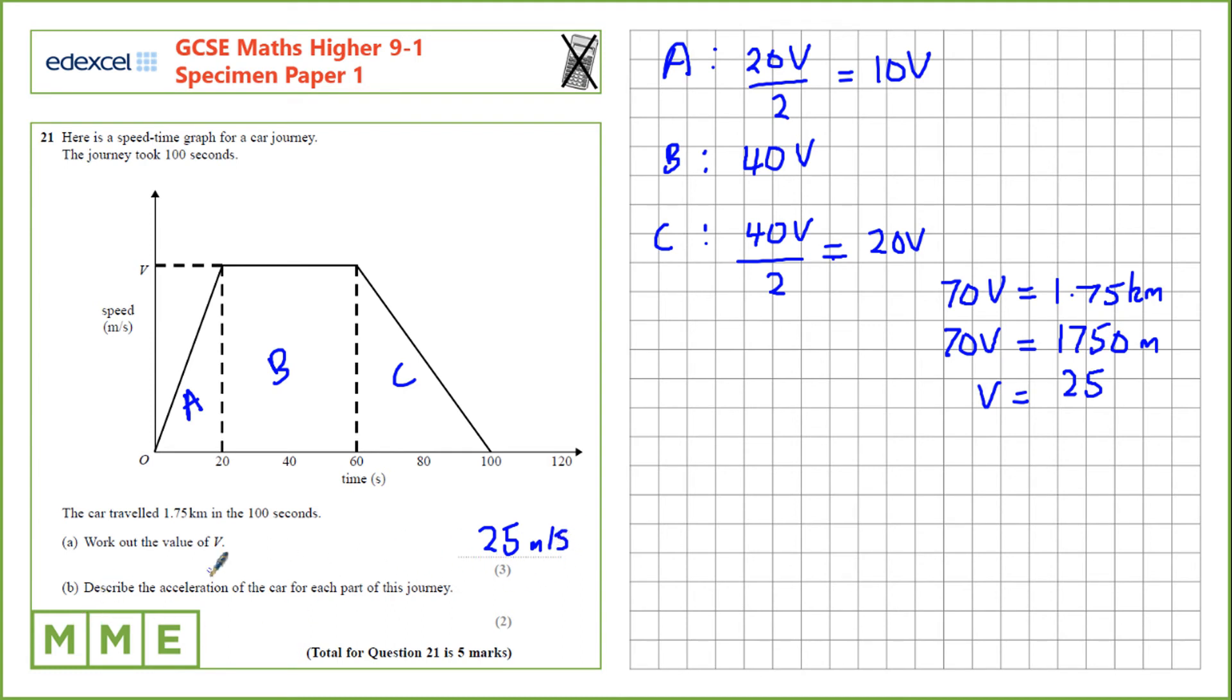Next, we need to describe the acceleration of the car for each part. So at this point, the slope stays at the same gradient the entire time. For A, we call that constant acceleration.